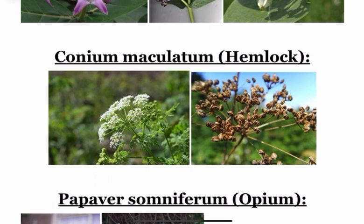Next is Conium Maculatum, also called as Hemlock. The active principle is Conine. It is a peripheral nerve poison and it causes paralysis due to depression of the motor nerves.